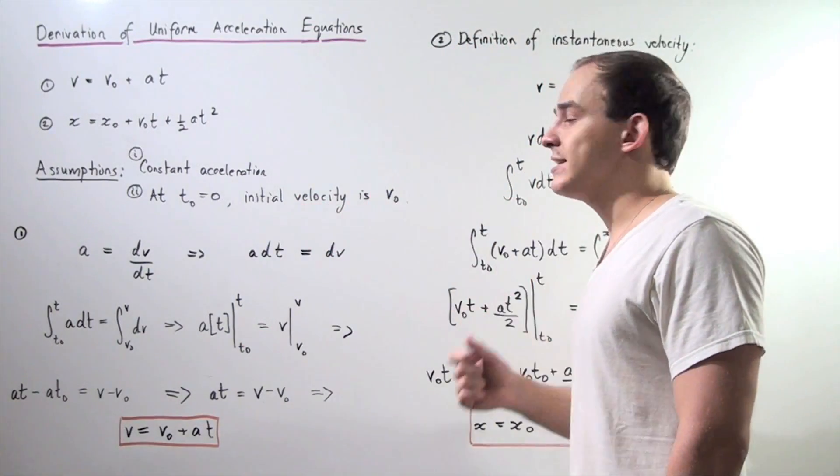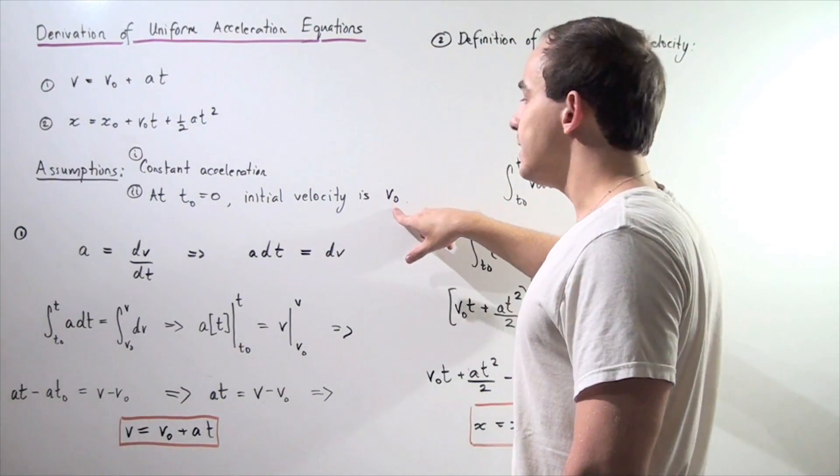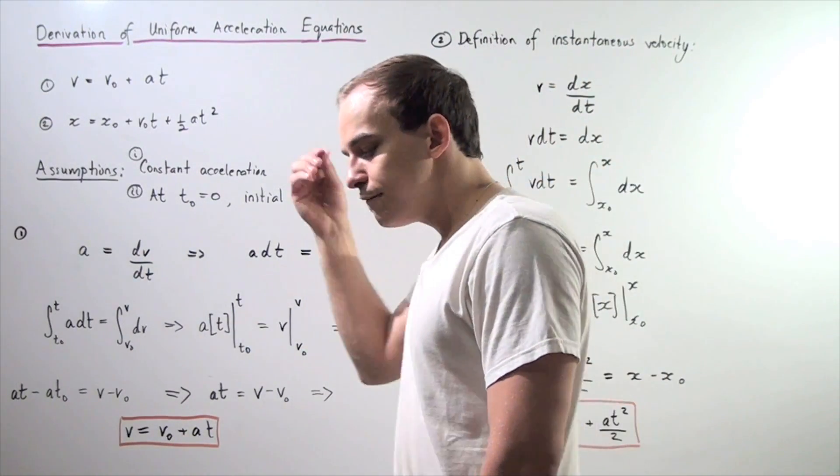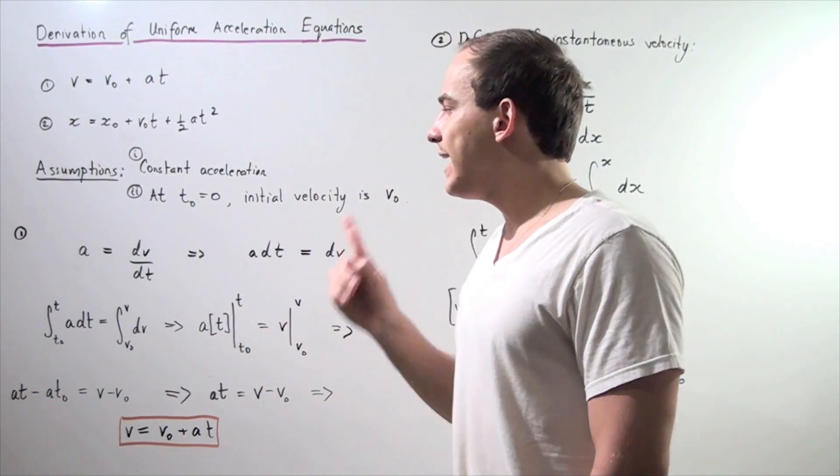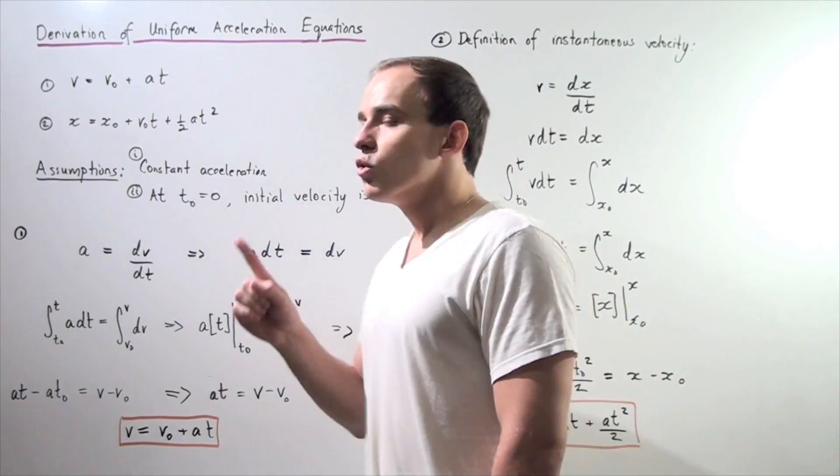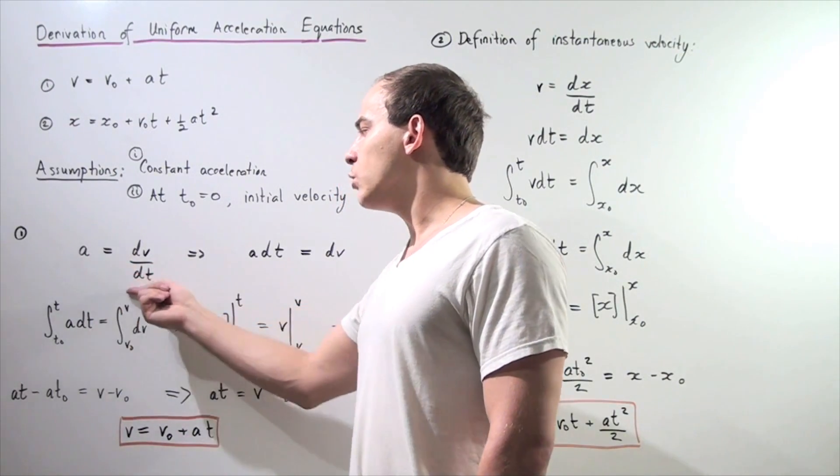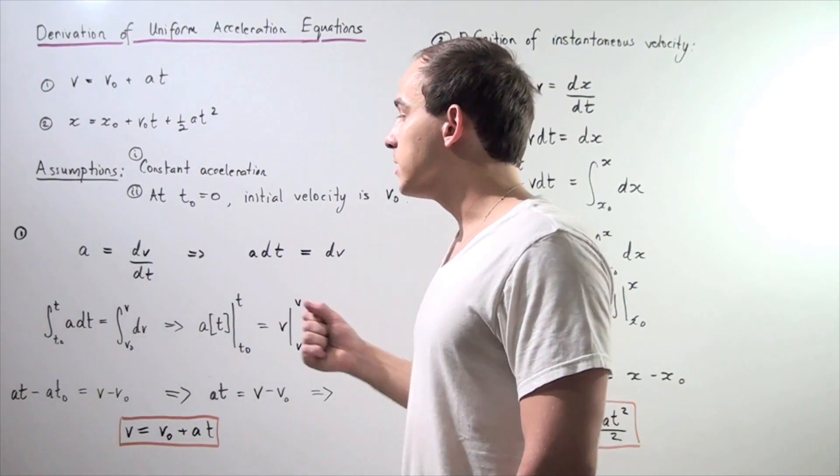our initial velocity is represented by v-naught or v-initial. Now, let's begin by defining what our instantaneous acceleration is. Recall that the definition of instantaneous acceleration is given by the following formula.